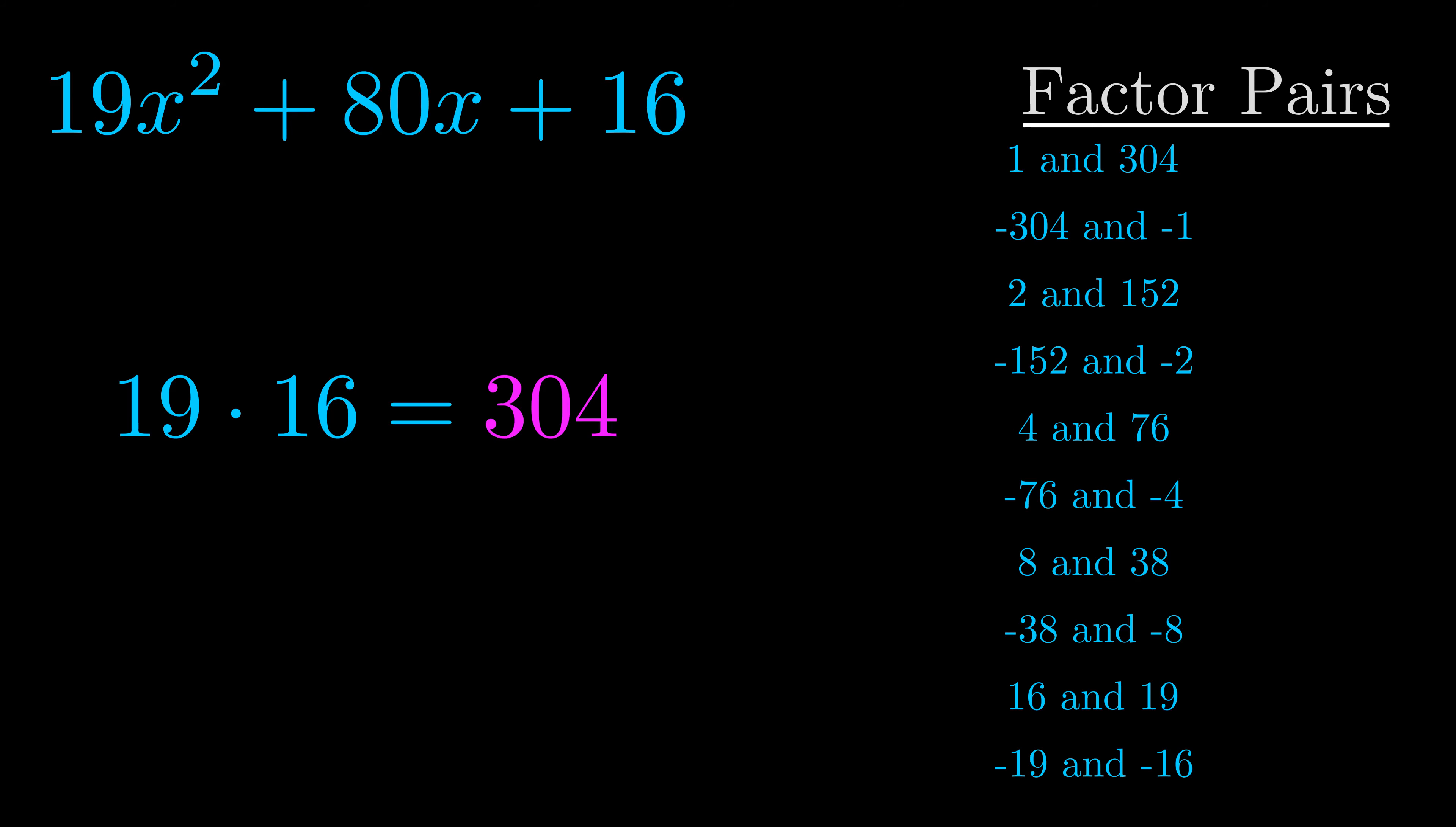The b value is the coefficient on the x term. That's the middle term, the one that we haven't done anything with yet. And really this is the only factor pair that we need.